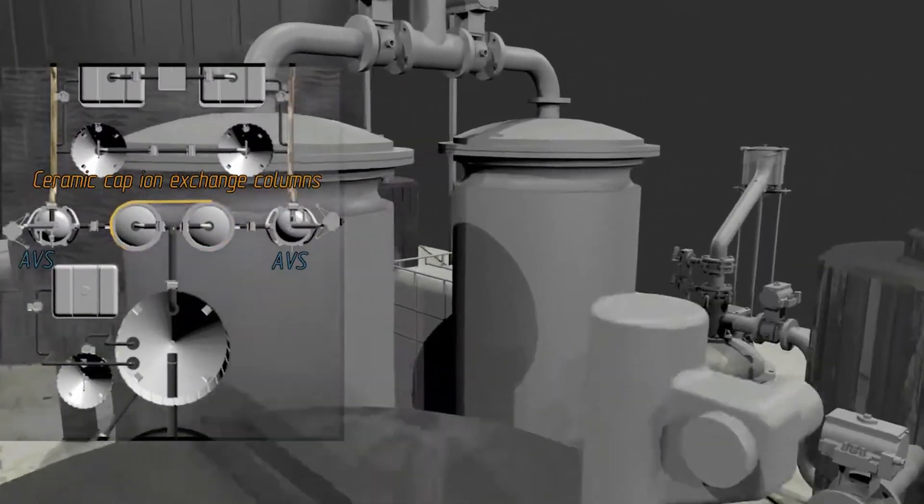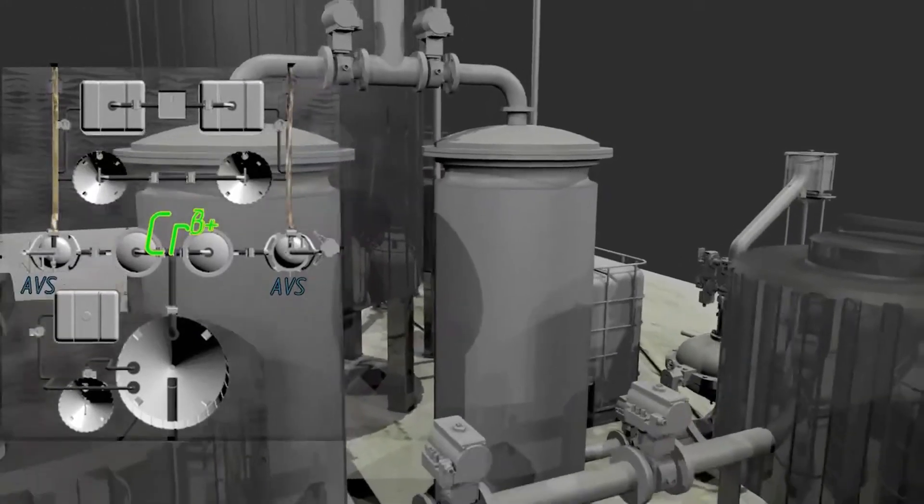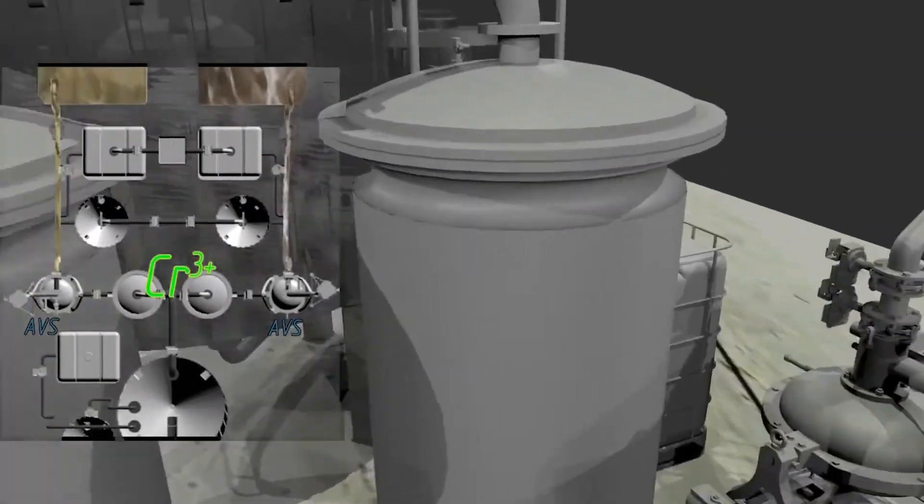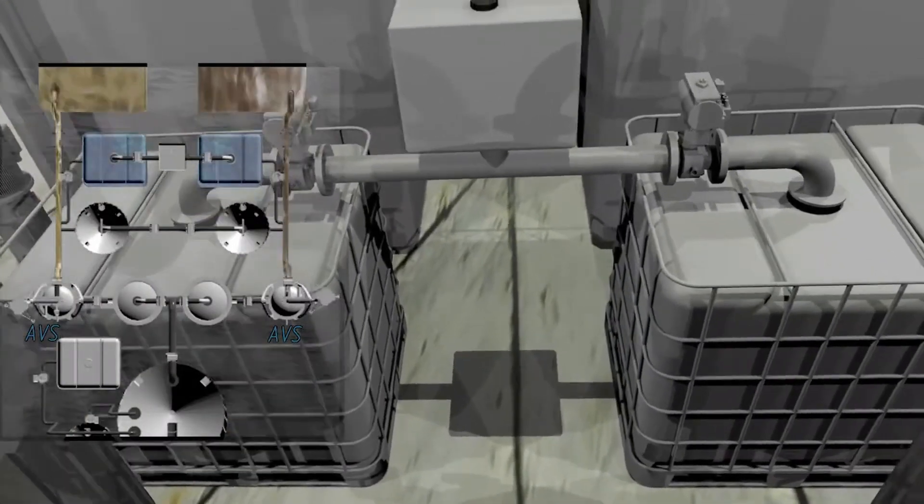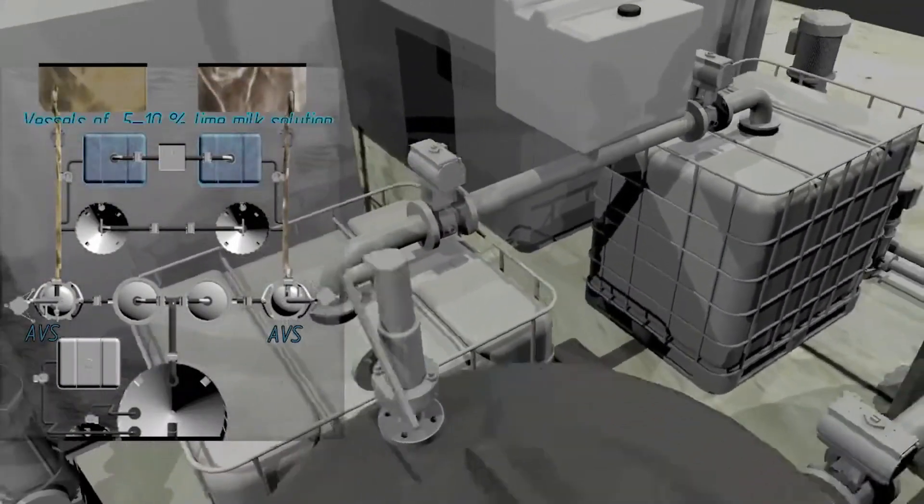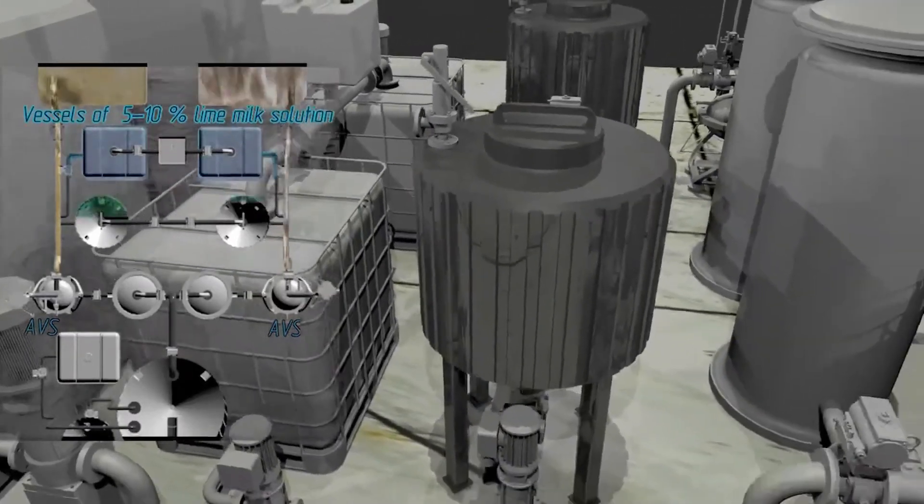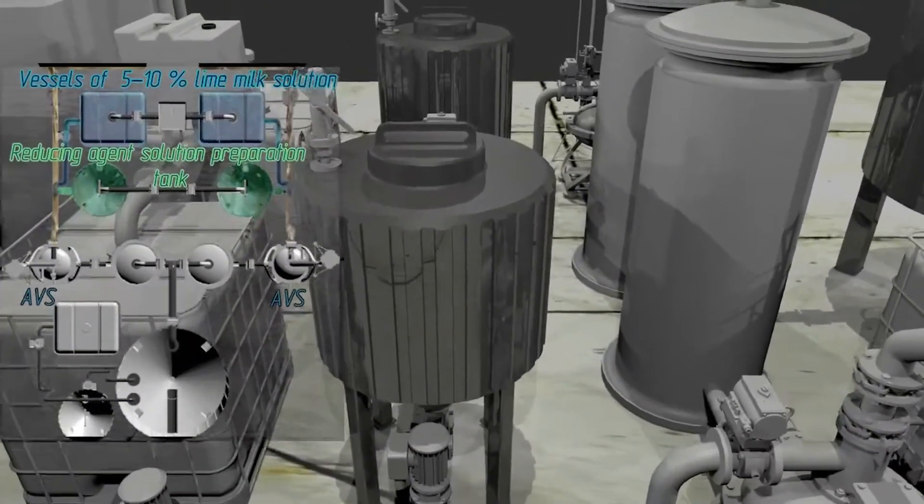Mass exchanging columns are installed near these devices to improve the conditions for simultaneous reduction of hexavalent chromium to trivalent chromium, as well as for formation of heavy metal hydroxides. A lime milk solution from one tank and a reducing agent process solution from the other tank are supplied to AVS devices concurrently with treated wastewater. After treatment by means of AVS, the wastewater enters the sump for clarification.